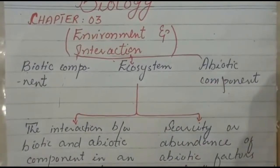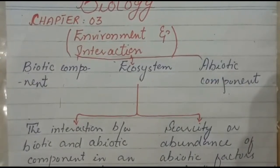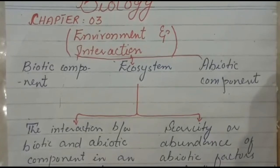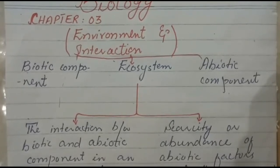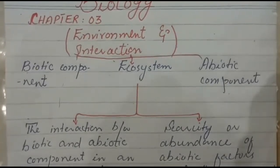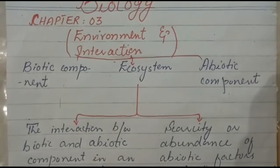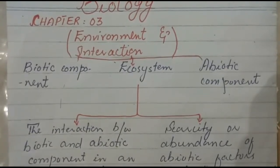Now for abiotic components — 'a' means without, 'biotic' means life — so non-living things are called abiotic components, such as water, temperature, light, and soil. This is very important because the types of plants and animals found in a particular ecosystem depend on these. For example, in deserts, soil and water are scarce, so camels are found there. This tells us about habitat and adaptation based on abiotic factors.